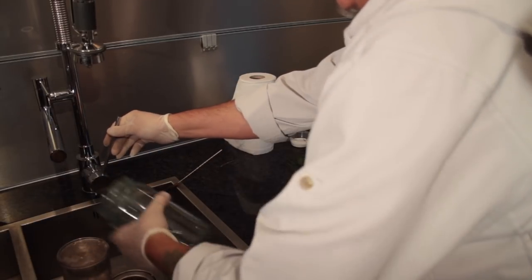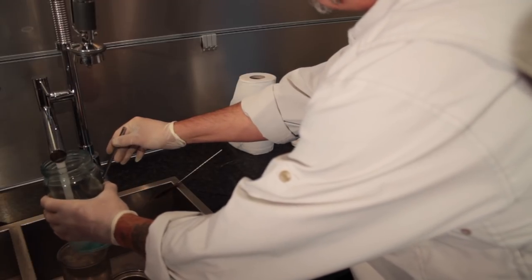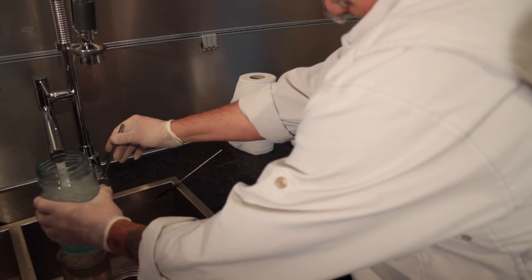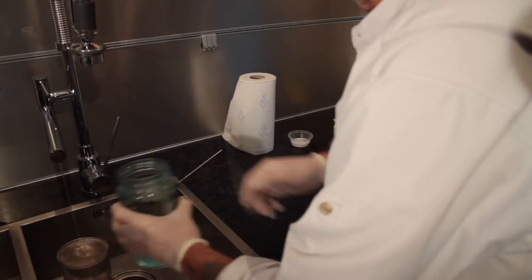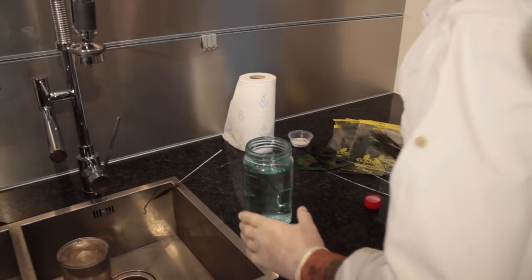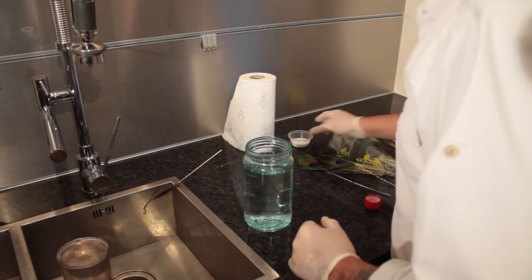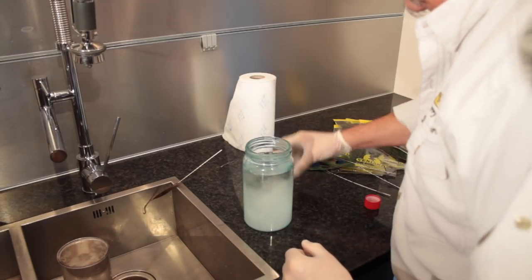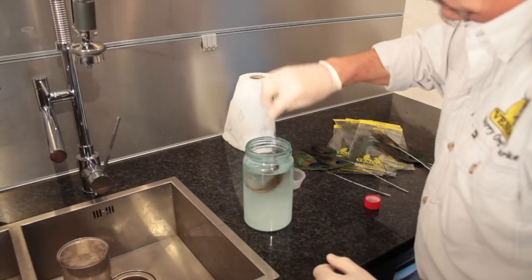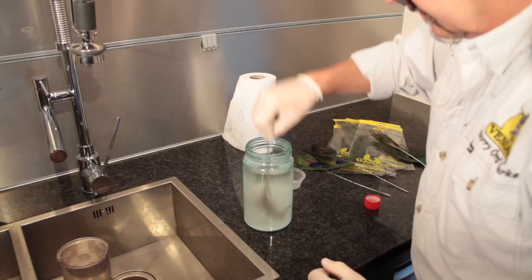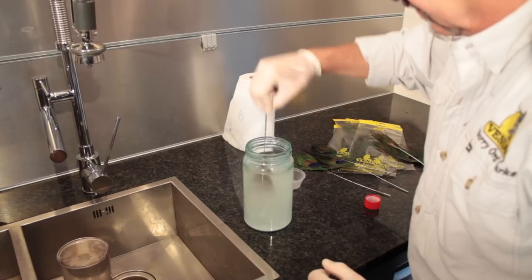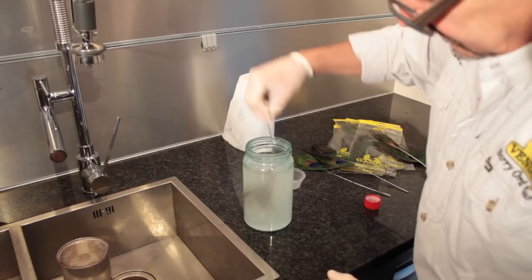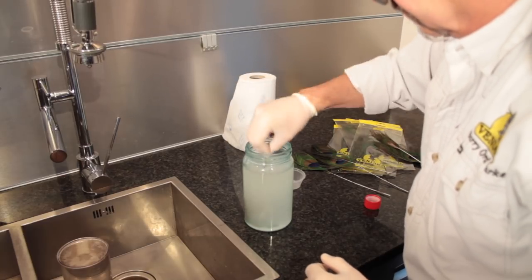Those are looking good now. Empty out the bleach, give it a rinse, fill it with hot water again. Then we need our natron or baking soda in there. This will neutralize and stop the burning effect. Give them a good wash.